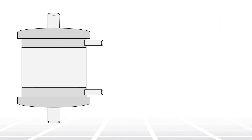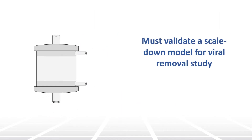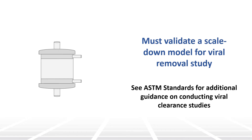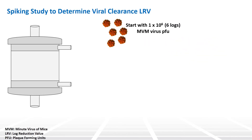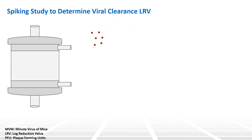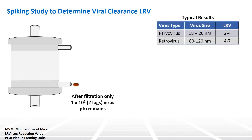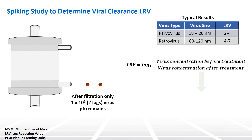To validate virus removal for regulatory filings, small-scale spiking studies are conducted by first validating a scaled-down model of the at-scale manufacturing process. Next, using a predetermined concentration of known virus and after conducting this step using identical conditions as seen at large scale, the amount of virus remaining is quantified to determine log reduction value.